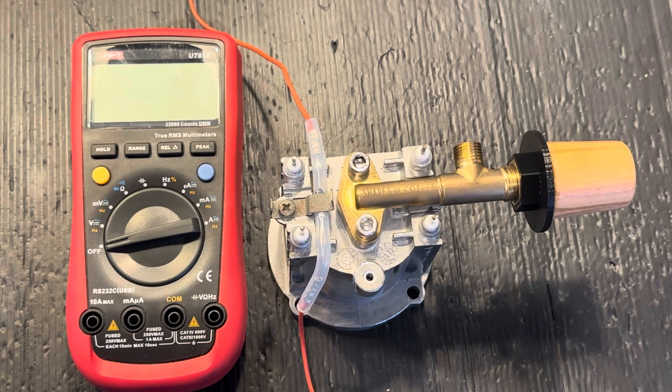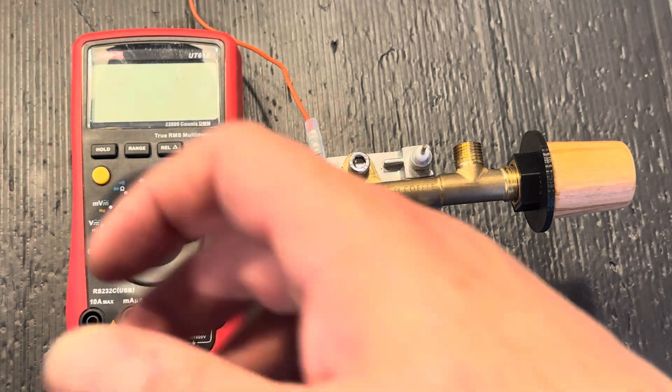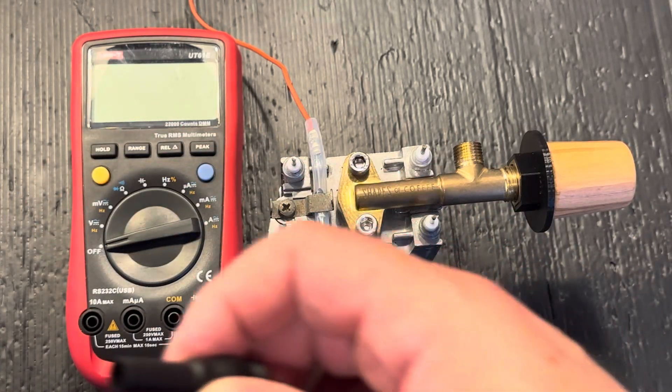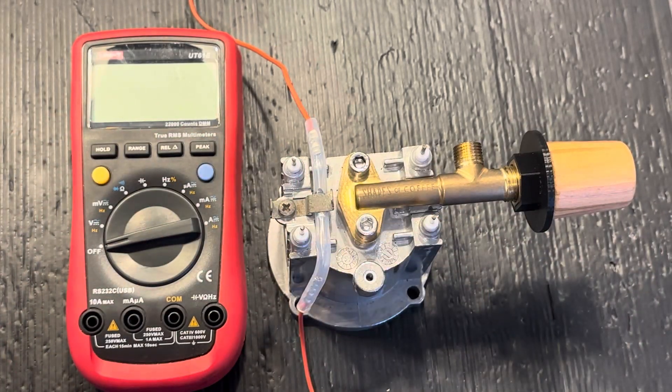Hi, here's a quick video from Shades of Coffee showing you how to test a thermal fuse on top of a Gaggia boiler. We're going to use a standard electrical multimeter.